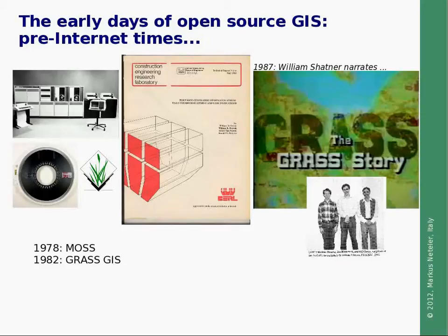This predates the internet times. In those days the computers were very big. Data exchange and software exchange happened on magnetic tapes. In the early 80s the first open source GIS systems appeared. One was the MOS system and the second one GRASS GIS, which is under continuous development.